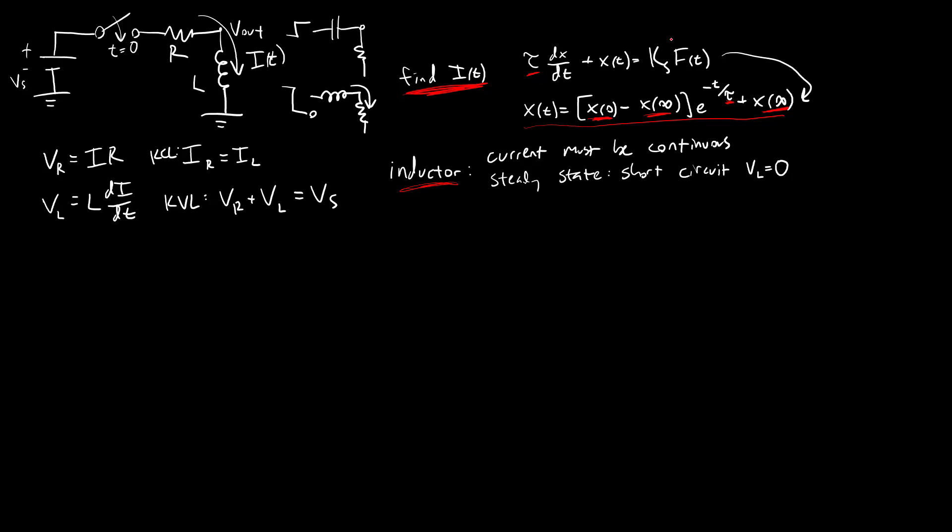We can find the initial condition and the final condition by analyzing the circuit using our rules for an inductor. And we can find tau if we can get this differential equation. Let's do that first and figure out how we can get a differential equation of this form that is going to give us tau.